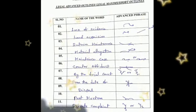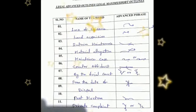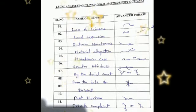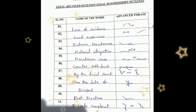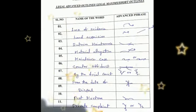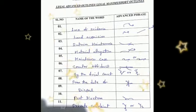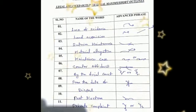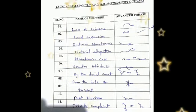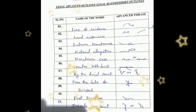The next word is 'from the date of disposal.' The outline of the word is F-R for 'from,' attach a small hook for 'the,' intersect D double and V hook, and then L.